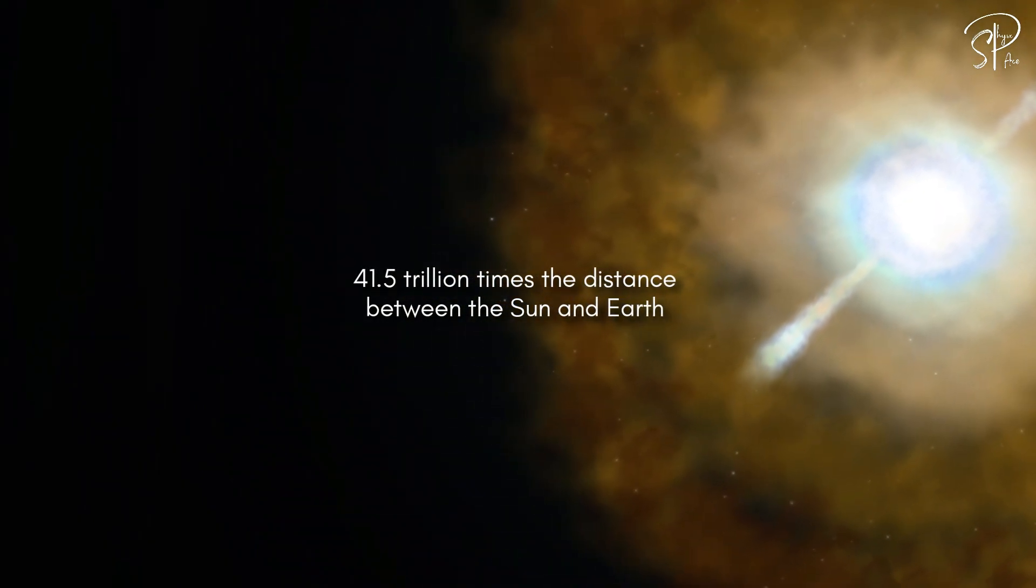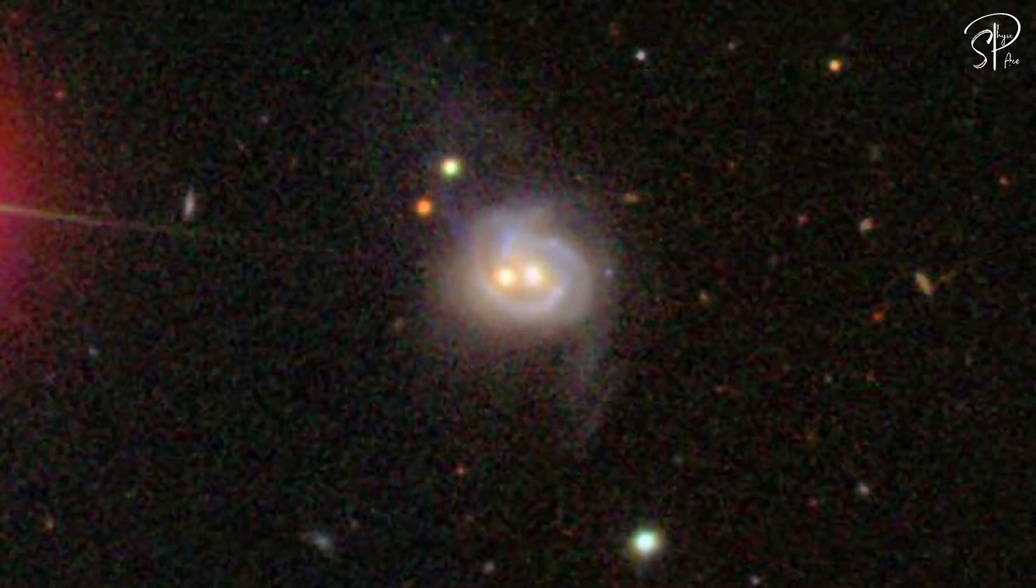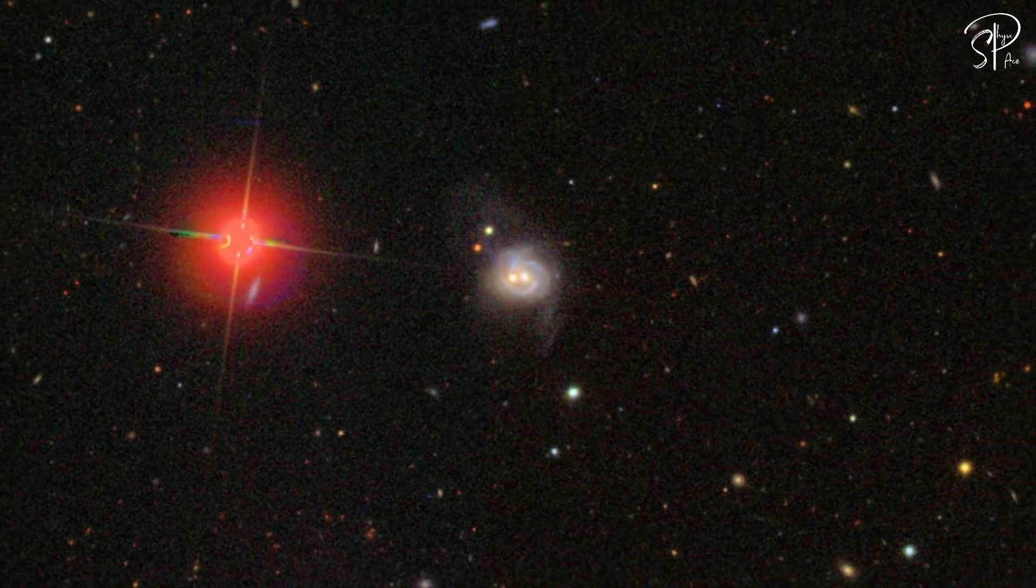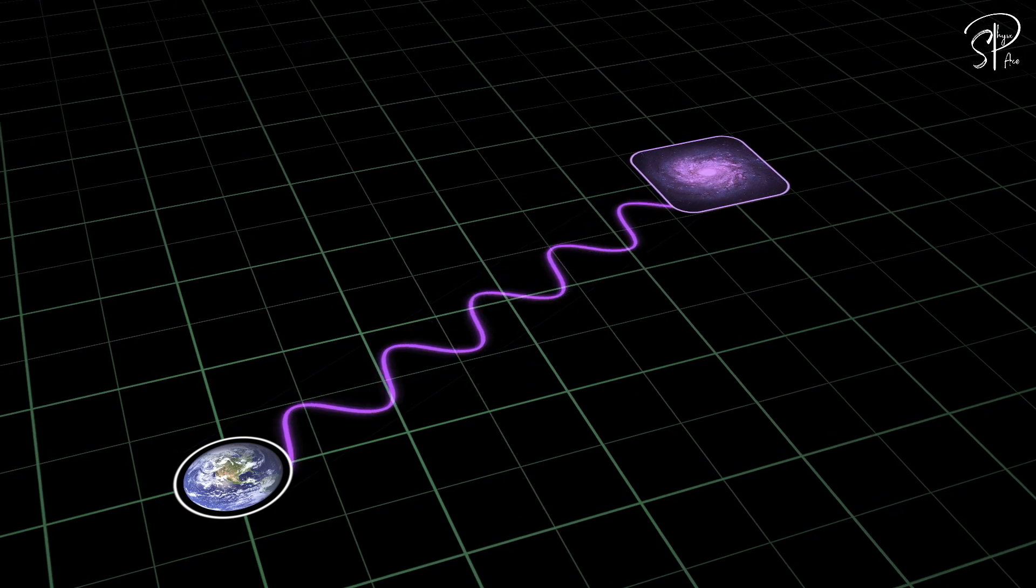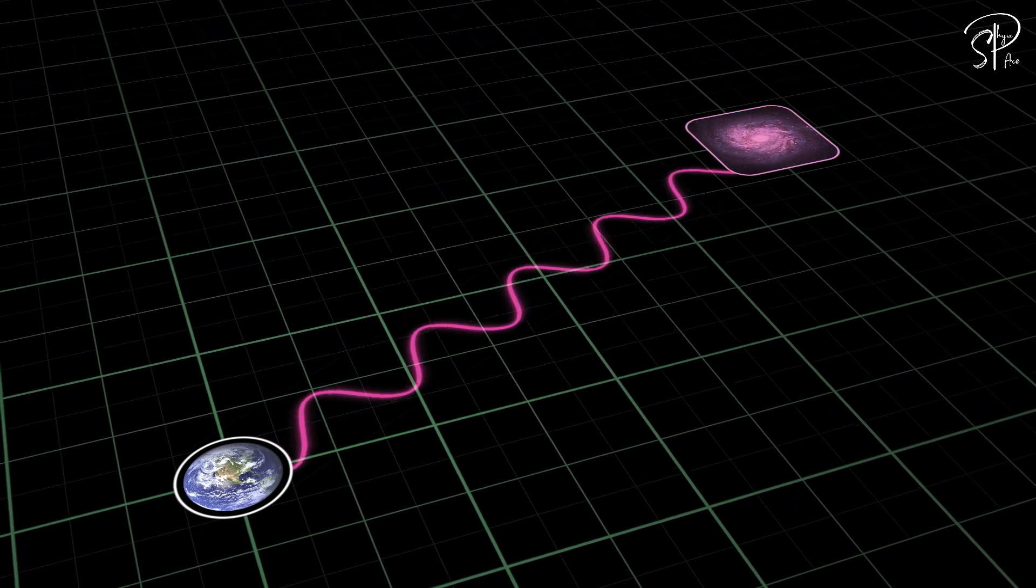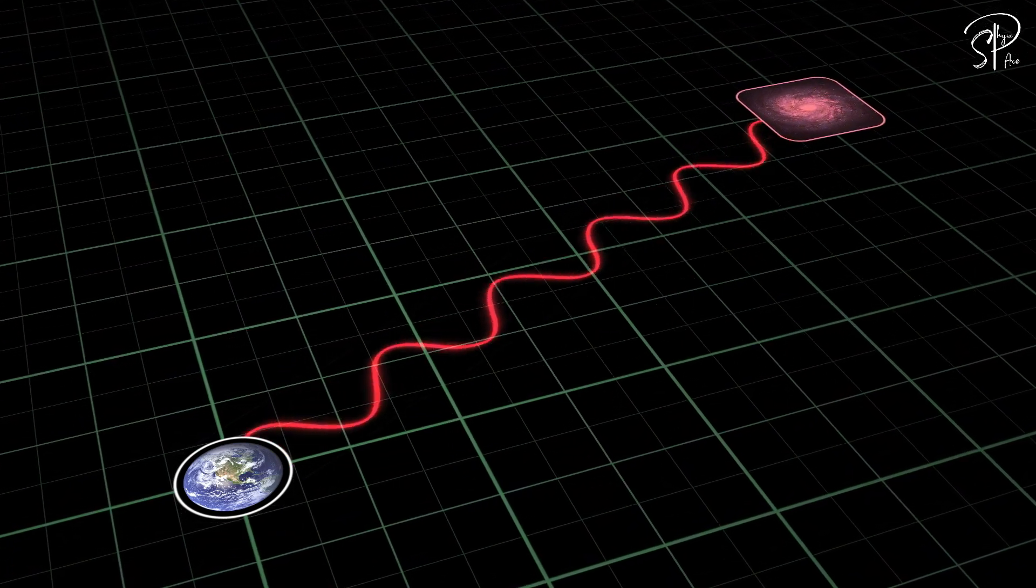Despite the jet pointing in our direction, the immense distance of 41.5 trillion times the distance between the sun and Earth ensures that the radiation from these energetic jets will have no impact on us. As the radiation traverses this vast distance, it loses all its energy due to redshift, rendering it harmless.